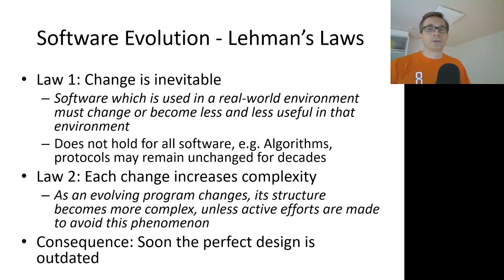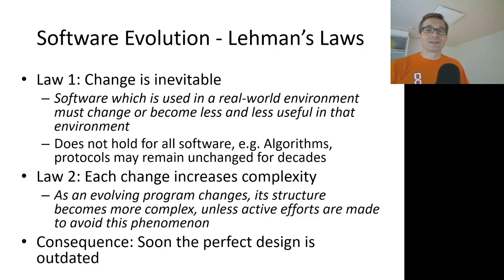Law two of software evolution says that as a program changes, its structure becomes more complex, unless active efforts are made to avoid this phenomenon. These active efforts may be called by names such as refactoring or re-engineering.